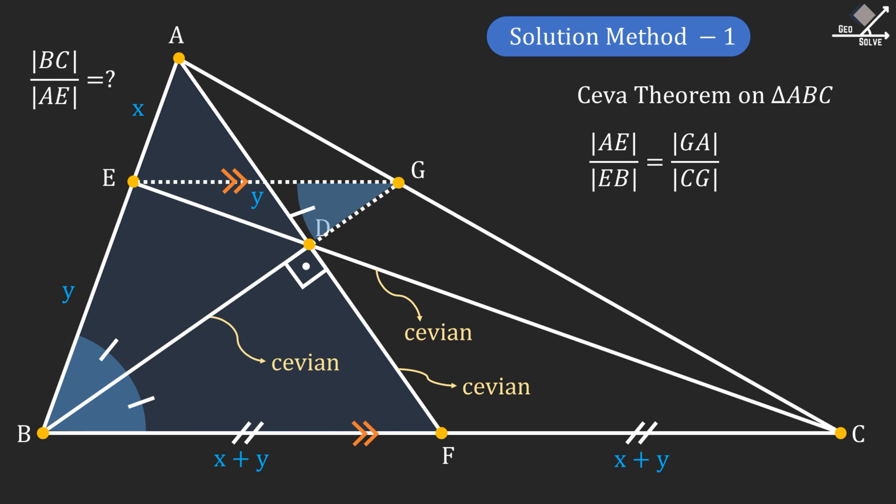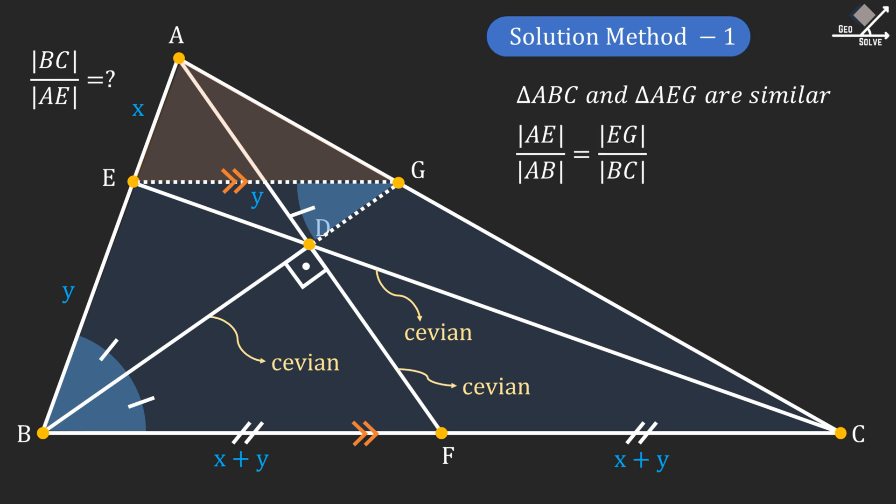Now if we notice since EG and BC are parallel, triangle ABC and triangle AEG are similar triangles. From similarity, we can write AE over AB equals EG over BC.